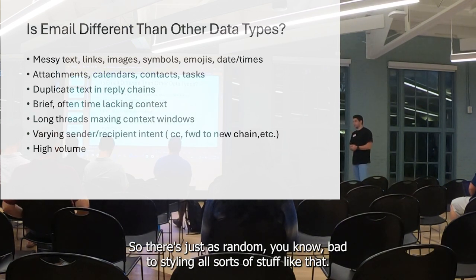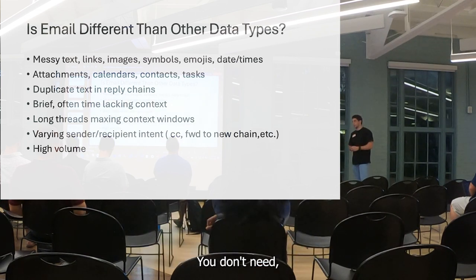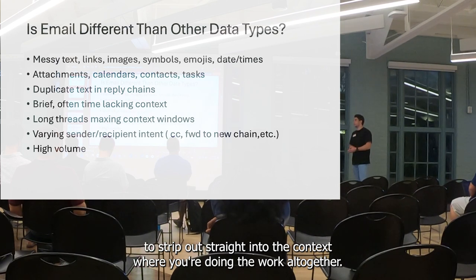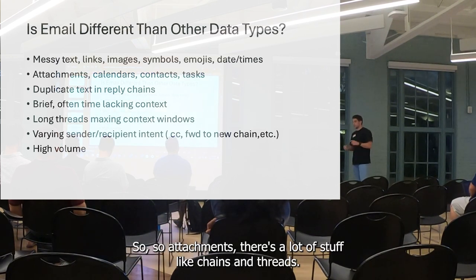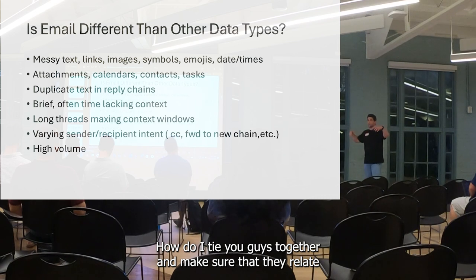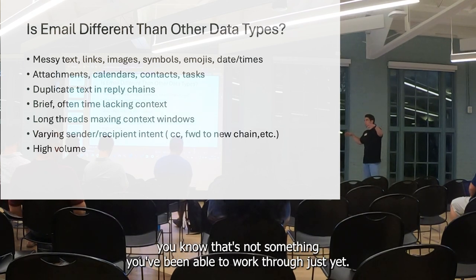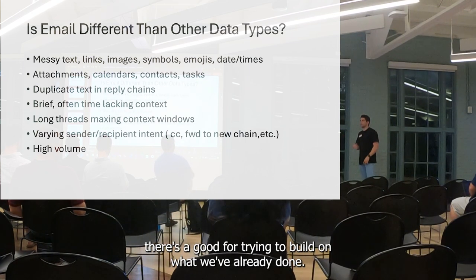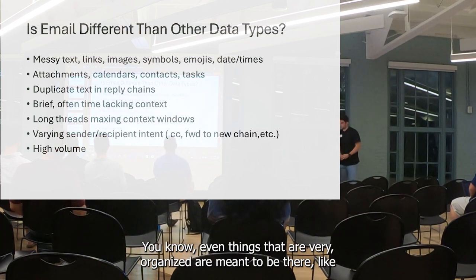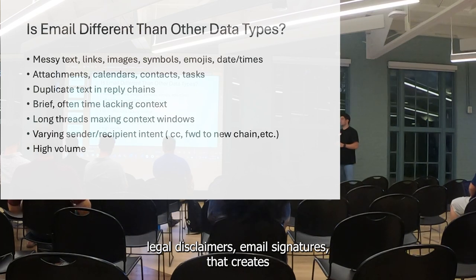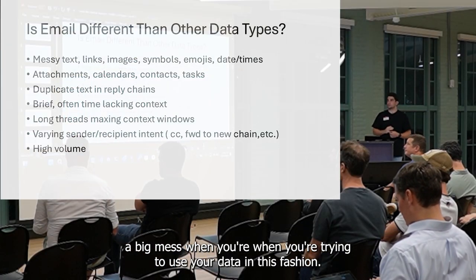There's random HTML embedded, styling, all sorts of stuff, links you don't need. Sometimes you can provide context, sometimes it's stuff you just need to strip out to fit into the context window. Then there are attachments, chains and threads — how do you tie emails together and make sure they relate back to one another? If you have one email and don't have the context from the previous email, that's not something we've been able to work through just yet. Even things meant to be there, like legal disclaimers and email signatures, create a big mess when you're trying to use your data this way.